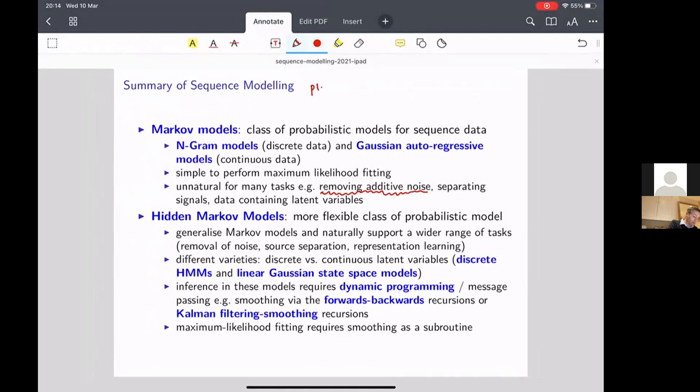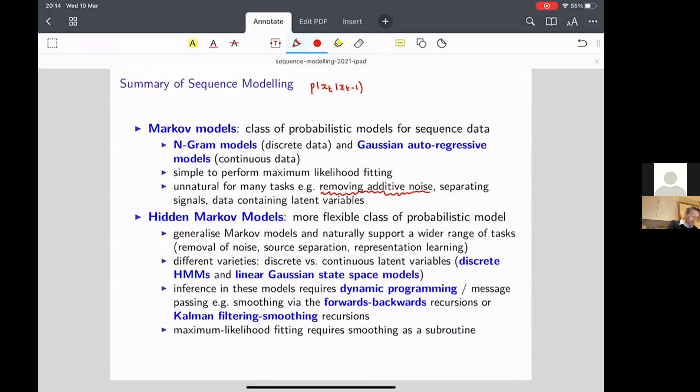so imagine that your uncorrupted signal, let's call it X, comes from a little Markov model which we can specify like this. And the actual observed data is a noisy version of that, and then we can write something like this,